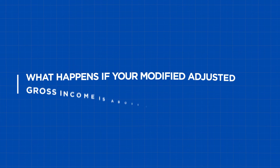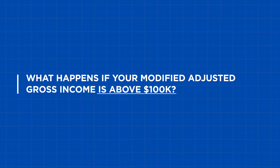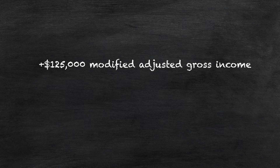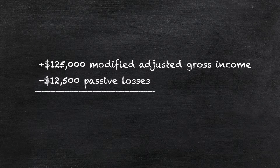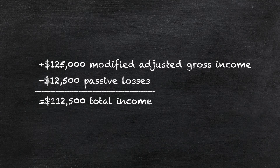But what happens if your modified adjusted gross income is above $100,000? If your MAGI is above $100,000, this deduction is phased out $1 for every $2 above $100,000. This means, for example, if your modified adjusted gross income is $125,000, your special loss allowance deduction is going to be limited to $12,500, because you effectively just cut the deduction in half.